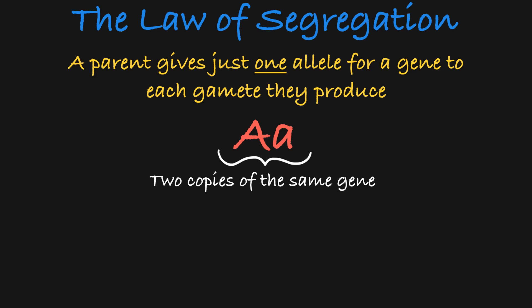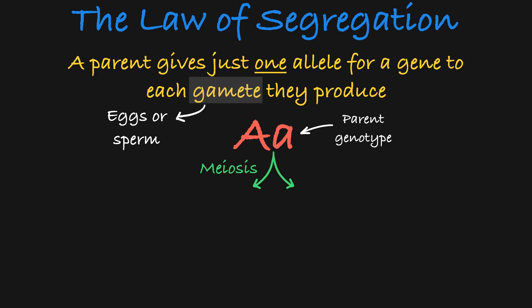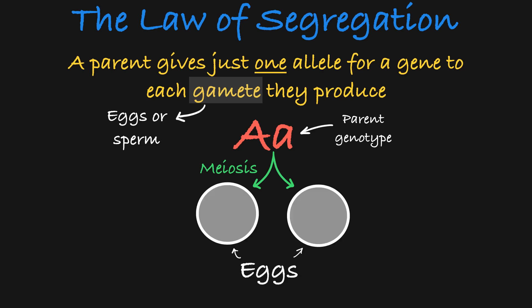Let's focus on a heterozygous parent. Gametes are eggs and sperm, created through the process of meiosis. During meiosis, the parent splits its genome in half, giving each gamete just one copy of each gene.